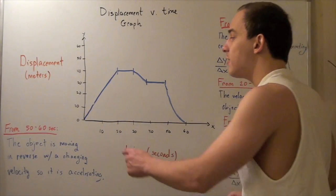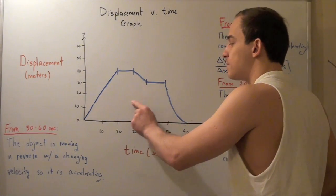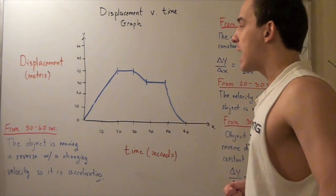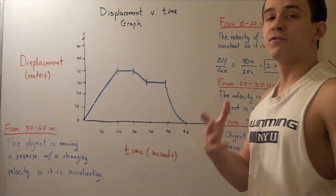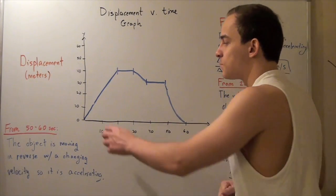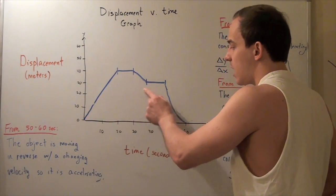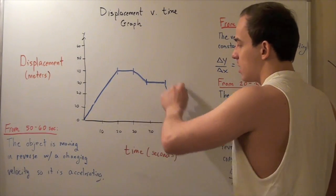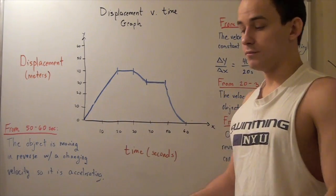Note that the area under a displacement versus time graph does not represent anything useful. We'll see in a second that in other graphs the area does represent something — like displacement or distance traveled — but in this case, taking the area of the region under this curve does not give us anything useful.